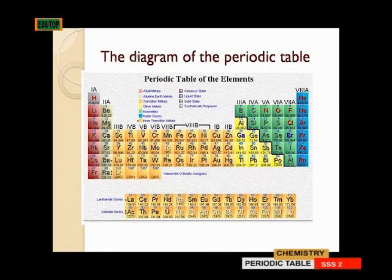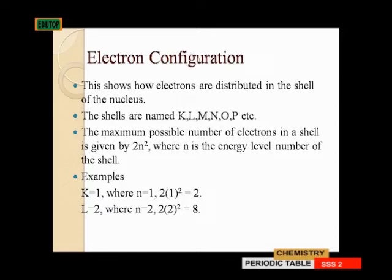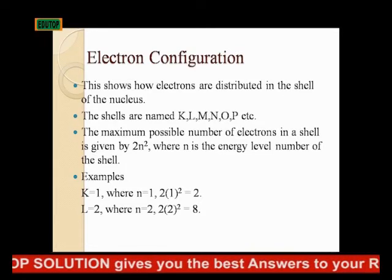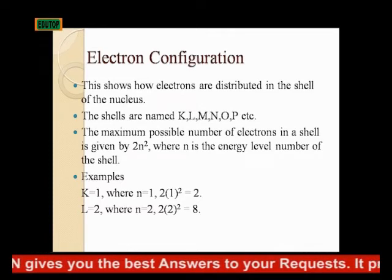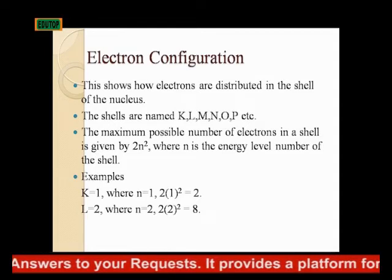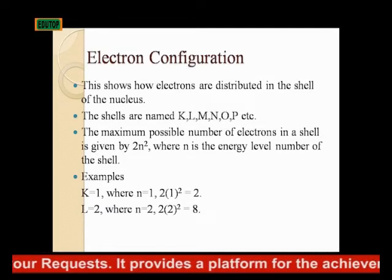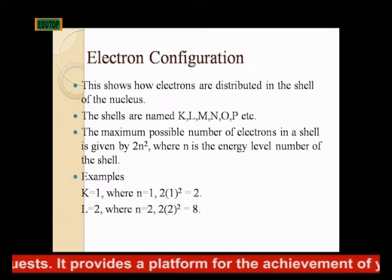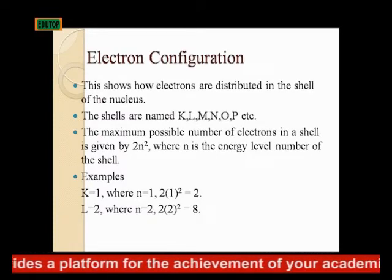Zinc is white in color because the number of electrons in the d-orbitals is 10, while any other transition element will be colored because its d-orbitals are not completely filled. Electron configuration shows how electrons are distributed in the shells of the nucleus. The shells are named K, L, M, N, O, P, etc. The maximum possible number of electrons in a shell is given by 2N², where N is the energy level of that shell.